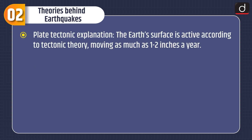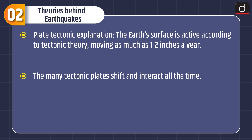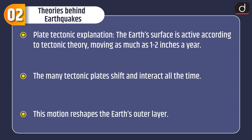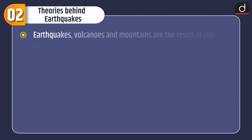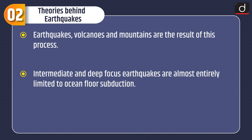The plate tectonic explanation: the earth's surface is active according to tectonic theory, moving as much as 1 to 2 inches a year. The many tectonic plates shift and interact all the time, and this motion reshapes the earth's outer layer. Earthquakes, volcanoes, and mountains are the result of this process. Intermediate and deep focus earthquakes are almost entirely limited to ocean floor subduction.